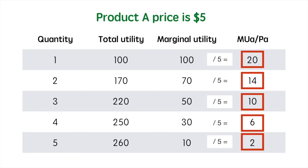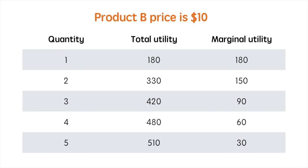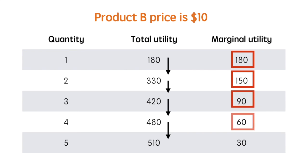Now let's do the same thing for Product B. Similar to Product A, we have a total utility table for consuming 5 units of Product B. The utility values look much higher here, but remember, we need to consider marginal utility and the marginal utility per dollar. Marginal utility decreases as more units of Product B are consumed. The first unit brings a marginal utility of 180, the second 150, the third 90, the fourth 60, and the fifth unit just 30 utils.